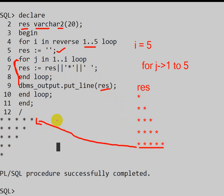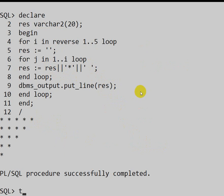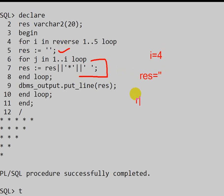Next, i value becomes 4. Result is reset to empty again. The inner loop iterates 4 times — each time concatenating a star — so result becomes 4 stars. At the end of the inner loop, that result is printed and we get the pattern of 4 stars.